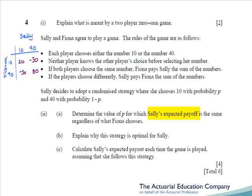Rather than going for a straightforward strategy using the minimax criterion, we are instead going to be applying a randomised strategy. So we assign the probability p and 1-p to each of Sally's choices, and work out the expected payoff to Sally if Fiona chooses 10, and the expected payoff to Sally if Fiona chooses 40. Since we're asked to determine the value of p where the payoff is the same, we simply equate these two payoff equations. Part b asks you to explain why this strategy is optimal, and part c is to actually calculate the expected payout by substituting your value of p into either payoff equation.